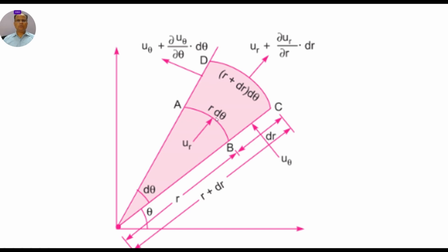Here I have chosen one small fluid element. The fluid element is dr and has a radius of r from the origin. The velocity component in the direction of the radius is ur, and the velocity in the tangential direction is u-theta. Now we will apply the rate of mass flow in and mass flow out through all directions: radial, axial, and tangential.